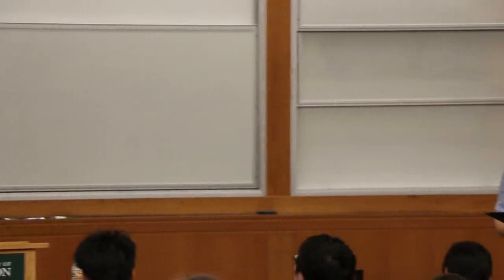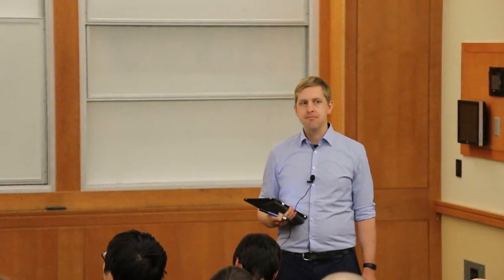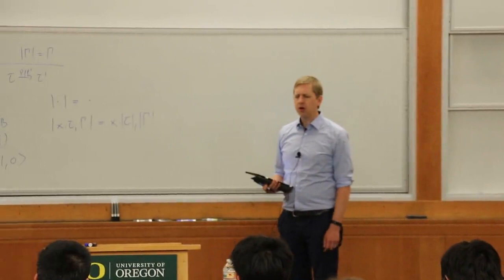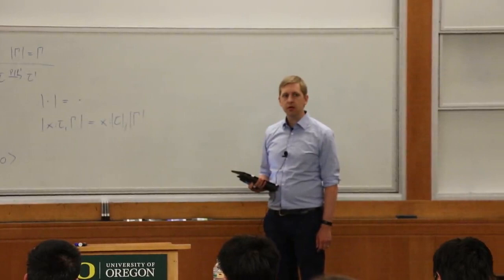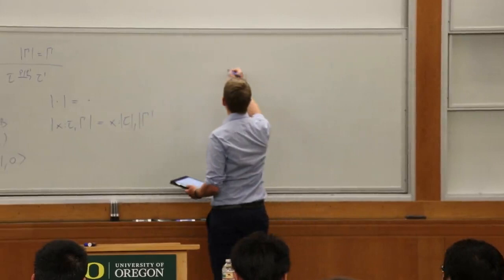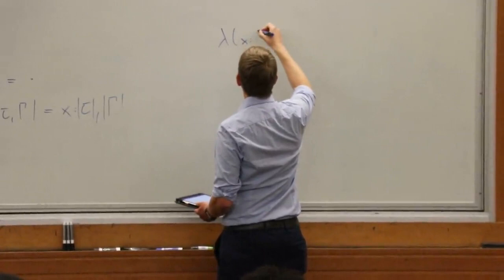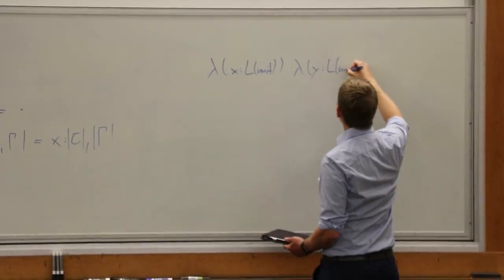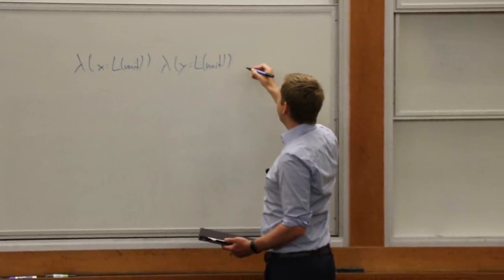Question: could you give an example of an expression that would type-check under the lambda rule if you didn't have the gamma equals absolute-value-gamma requirement, but doesn't type-check when you do have it? Typically the example is append. Let's say we have something like this — and then you want to return x.